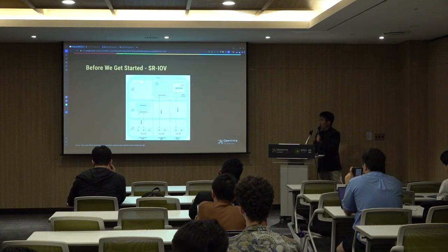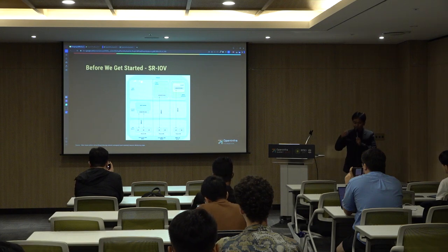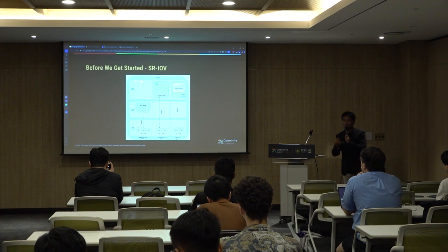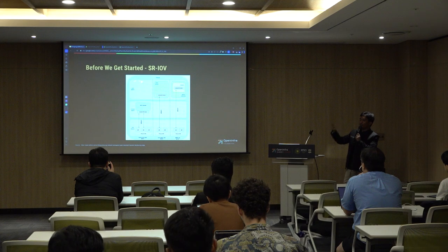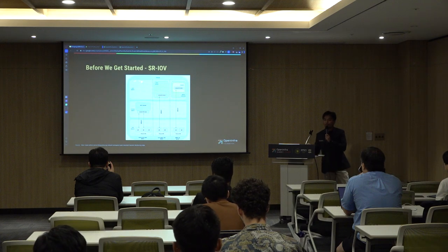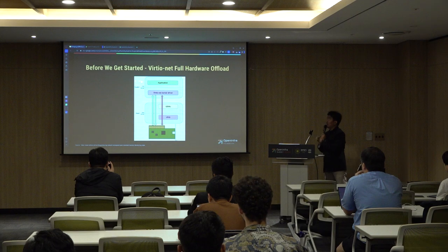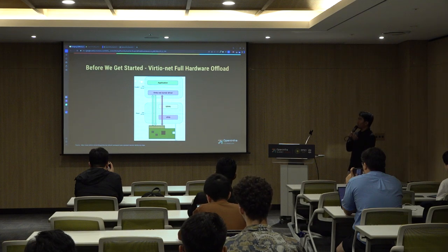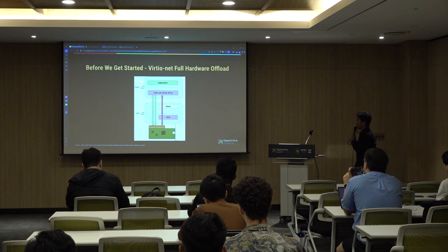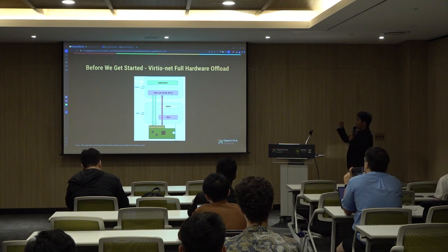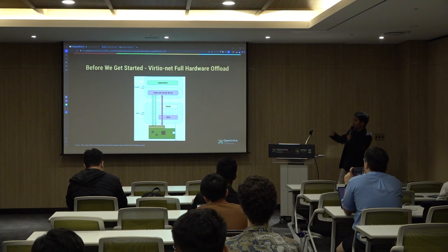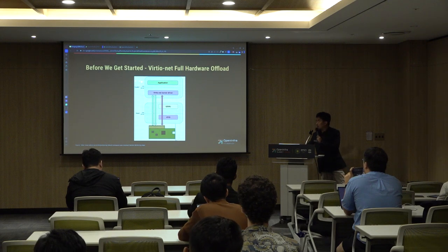With SR-IOV, we can create virtual functions and then pass them through into the VMs. The next alternative is VirtIO-Net full hardware offload. With VirtIO-Net full hardware offload, the control plane still uses VFIO, but the data plane is passed through into the physical device.